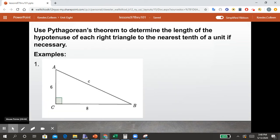So we can use Pythagorean's Theorem to determine the length of the hypotenuse of each right triangle to the nearest tenth of a unit if necessary. We know this first example is a right triangle because of the right angle marking in the corner, so we have the side lengths for the legs as 6 and 8, and we need to find C, which is the hypotenuse.